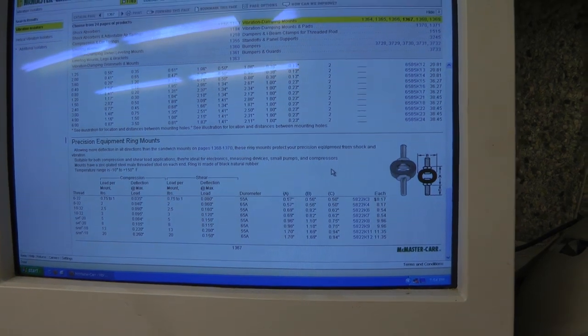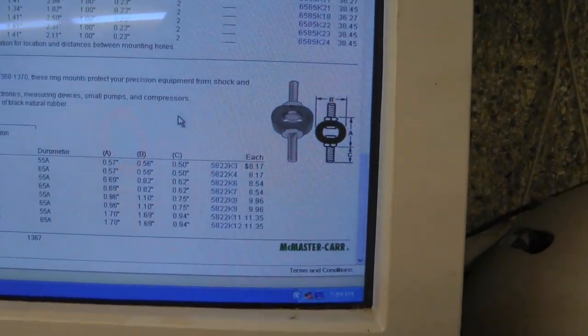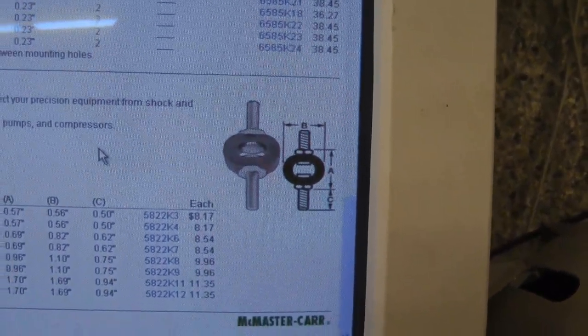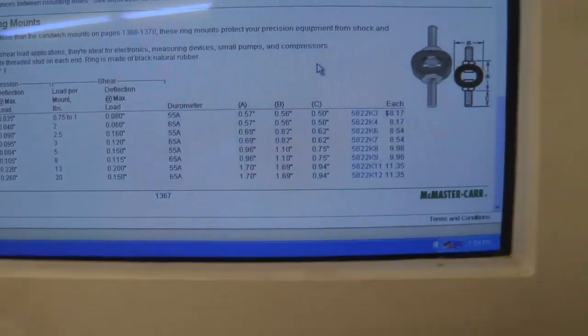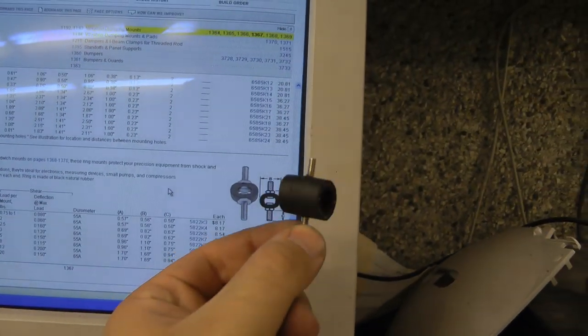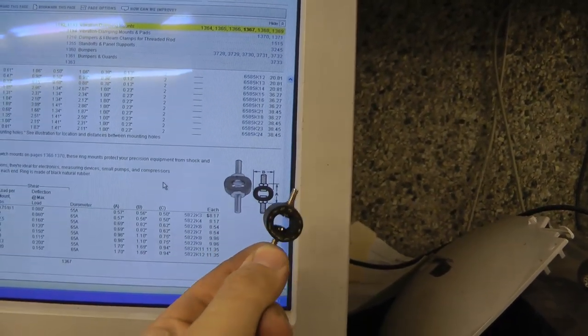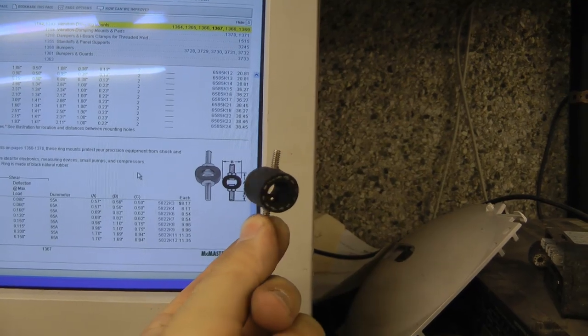I went looking around for vibration isolators and I found these ones with a little rubber ring between two screws that are pretty much perfect at McMaster Carr, however they're about $8 each and I don't want to spend that much so I figured I can do the same thing myself. So let's go put these in and see how well they work.